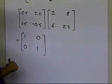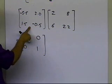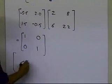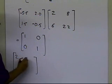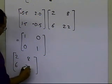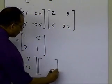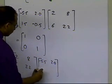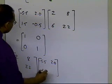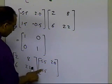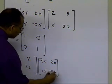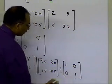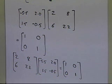And vice versa: this is also the inverse of the other matrix automatically. So if you take [2, 8; 6, 22] and multiply it by [−5.5, 2.0; 1.5, −0.5], you're also going to get [1, 0; 0, 1]. So they are the inverse of each other.